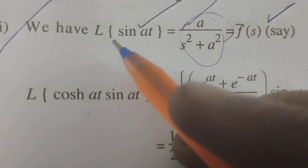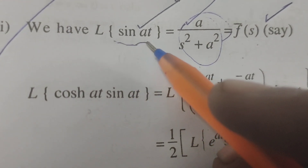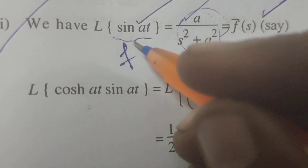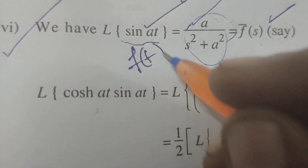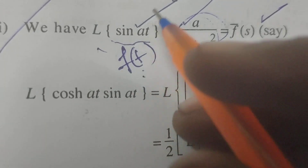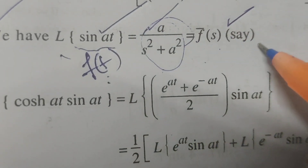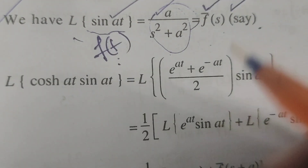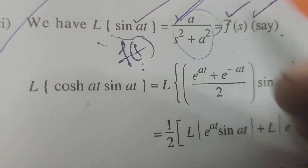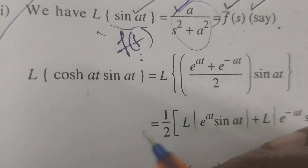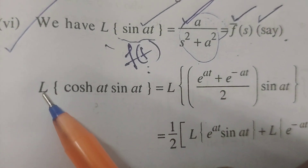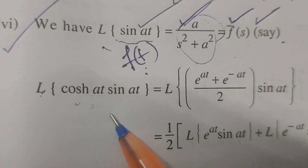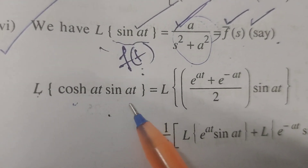Here, suppose sin(at) means f(t), so L{f(t)} means we know that f̄(s). Say f̄(s) in this term. Then L{cosh(at) · sin(at)}.